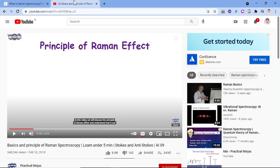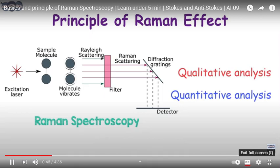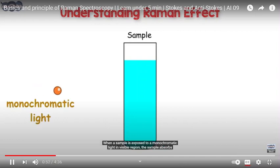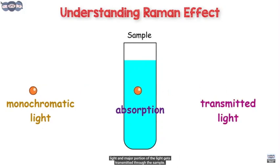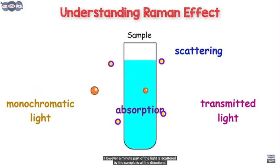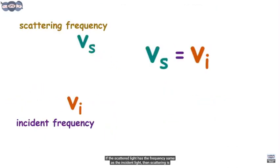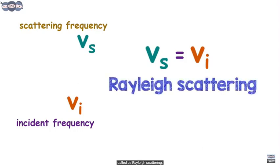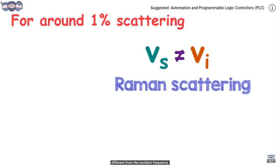To understand how Raman Spectroscopy can be used for analysis, we must first understand the Raman effect. When a sample is exposed to monochromatic light in the visible region, the sample absorbs light and the major portion gets transmitted. However, a minute part of the light is scattered by the sample in all directions. One can observe the scattering at right angle to the incident beam. About 1% of the total scattered intensity occurs at frequencies different from the incident frequency — this is called Raman scattering.